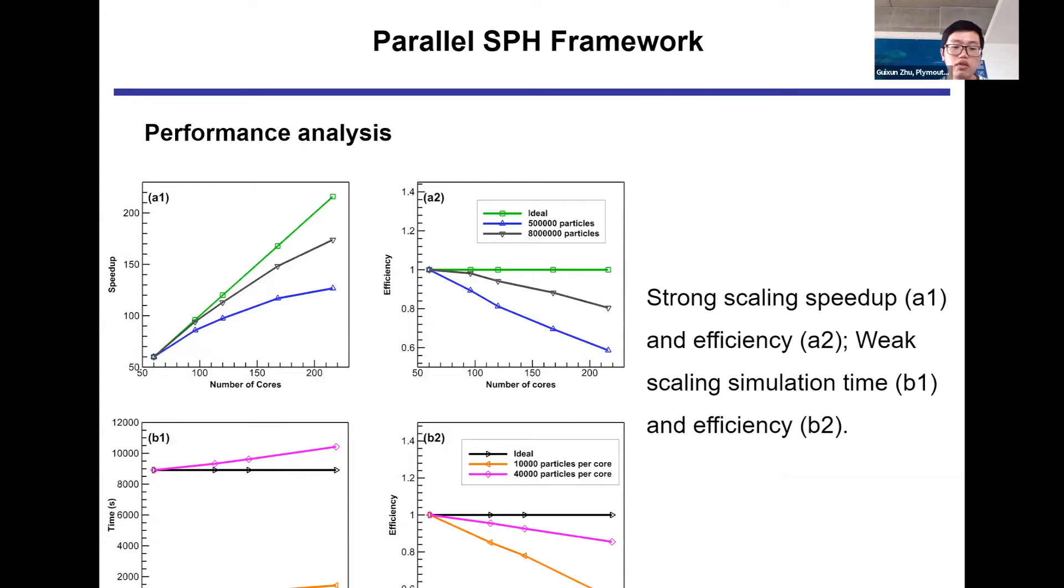In order to consider the overall parallel performance of the SPH framework, weak and strong scaling tests must be conducted. Strong scaling studies the time saving when simulating large scale problems, the speedup relative to one core to the number of computational cores working on the same problem in the domain. As the figure shows, as the number of cores increases, the speedup line gradually is farther away from the ideal values.